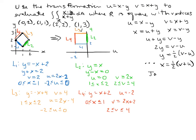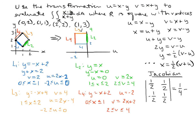Now for the Jacobian: we find the determinant of the matrix where the top-left is ∂x/∂u = 1/2, top-right is ∂x/∂v = 1/2, bottom-left is ∂y/∂u = -1/2, and bottom-right is ∂y/∂v = 1/2. Taking the determinant: (1/2)(1/2) - (1/2)(-1/2) = 1/4 + 1/4 = 1/2. The Jacobian is 1/2.